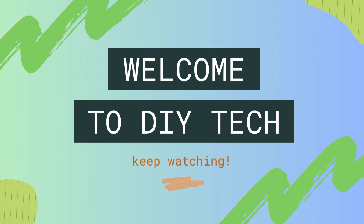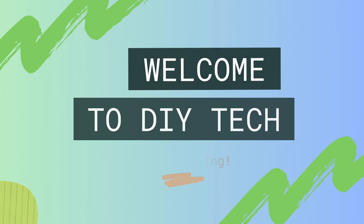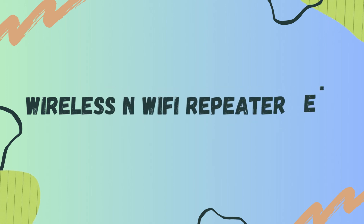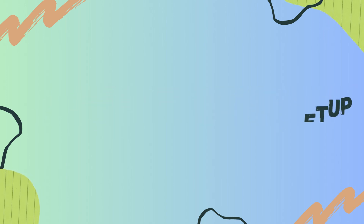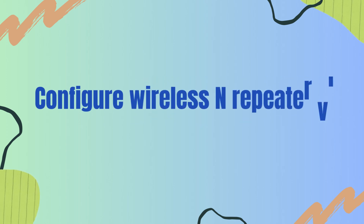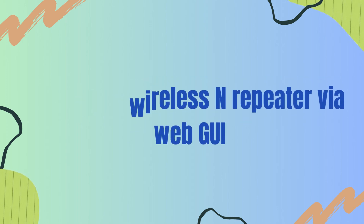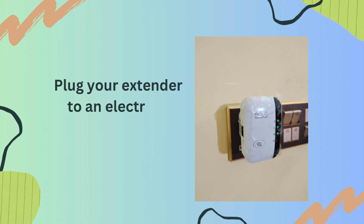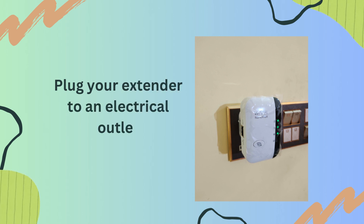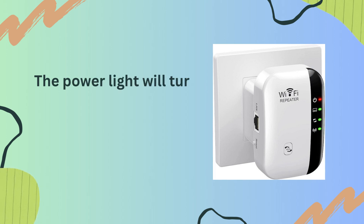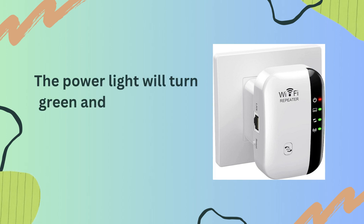Welcome to DIY Tech. This is a Wireless N Wi-Fi Repeater Setup guide — how to configure a wireless N repeater via the web GUI. Plug your extender into an electrical outlet. The power light will turn green and the Wi-Fi light will blink.